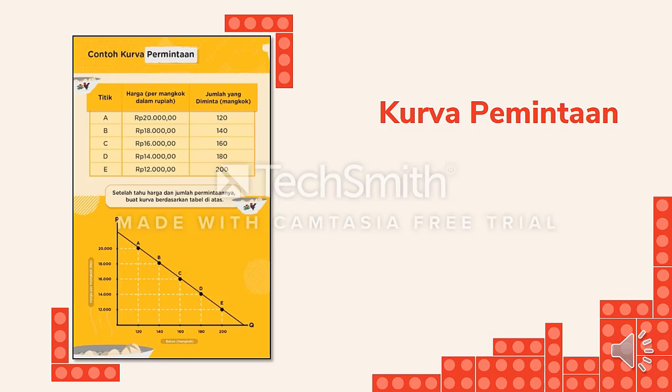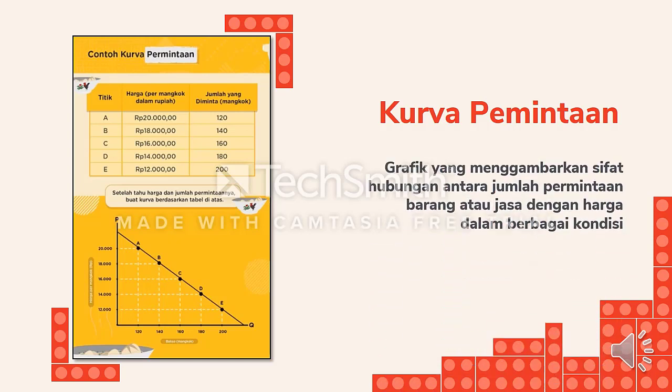Hubungan antara berbagai harga dengan jumlah barang yang diminta dapat digambarkan dalam suatu grafik yang disebut dengan kurva permintaan. Kurva permintaan adalah grafik yang menggambarkan sifat hubungan antara jumlah permintaan barang atau jasa dengan harga dalam berbagai kondisi.